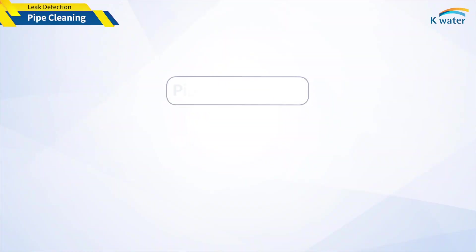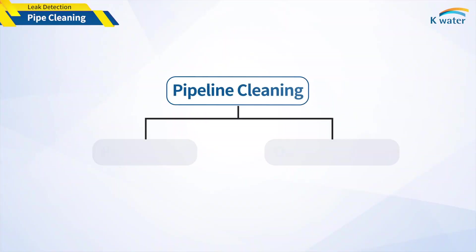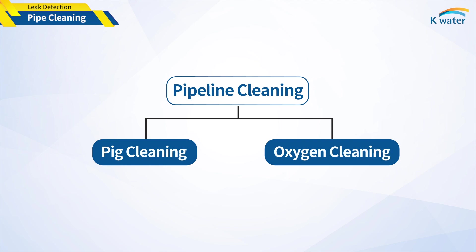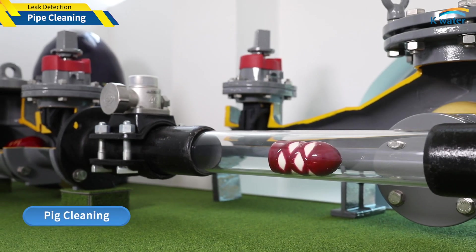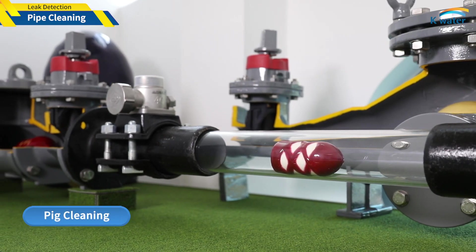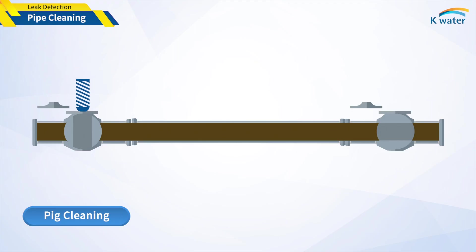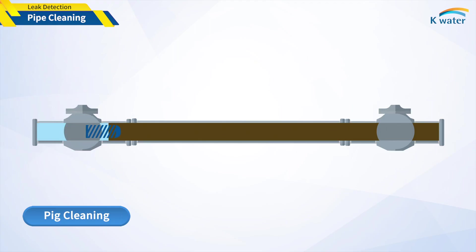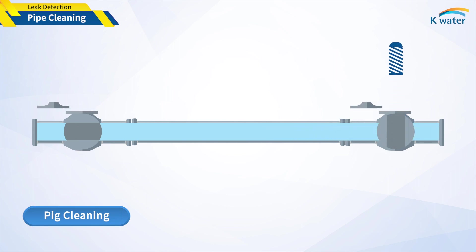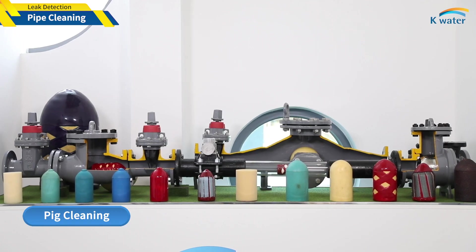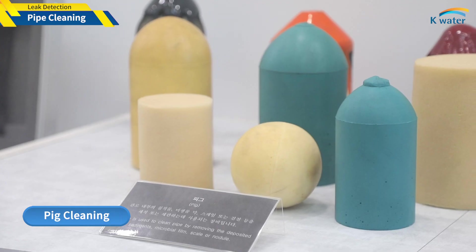There are two ways available to clean the pipeline: pigging and oxygen cleaning. Pigging is to remove sediments from the inner wall by generating friction as the pigs inserted in the pipe move by pressure and flow. Shall we practice pigging?